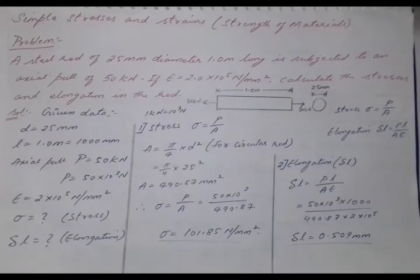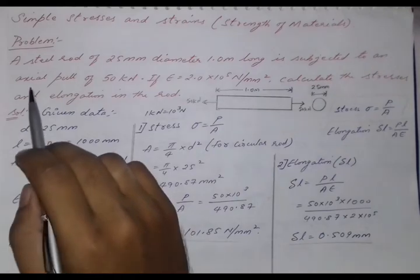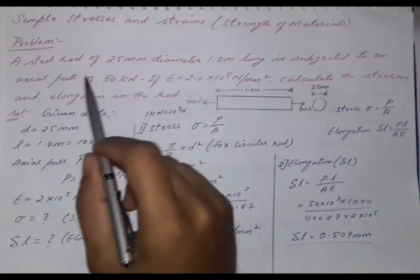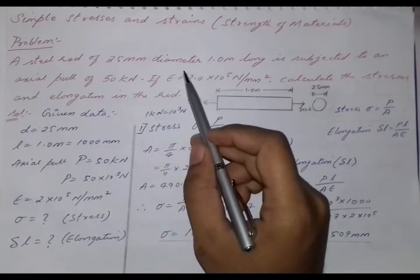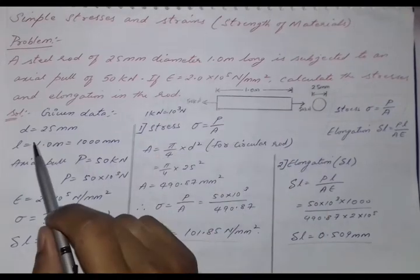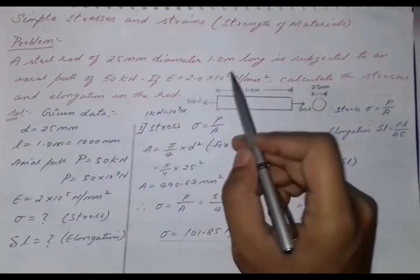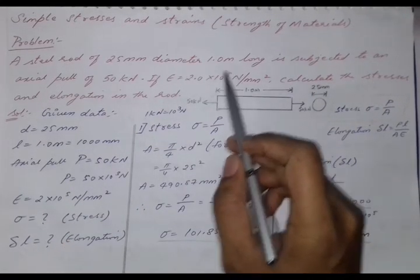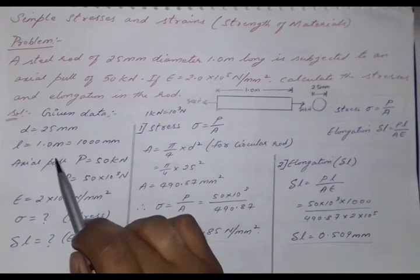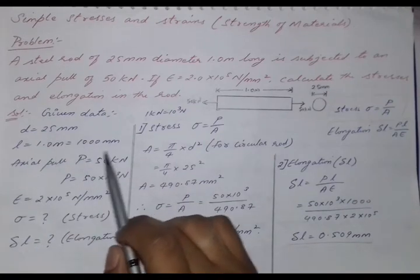Now on this topic I am going to solve a problem. The problem is a steel rod of 25 mm diameter. The diameter of the steel rod is given to us as 25 mm whose length is 1 meter. So L equals 1 meter and can be written in mm as 1000 mm.